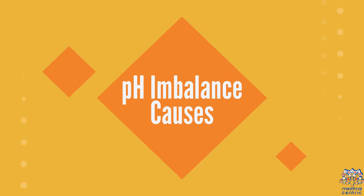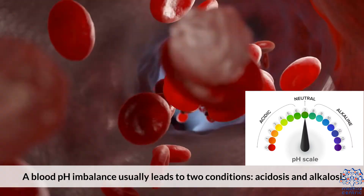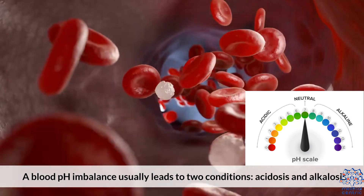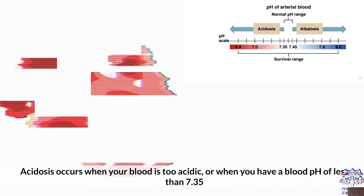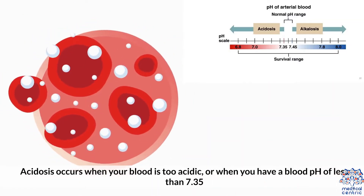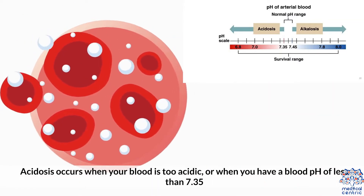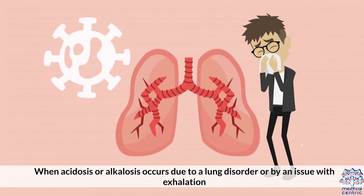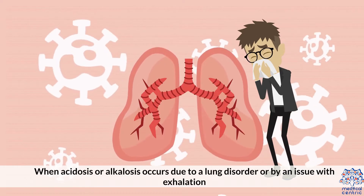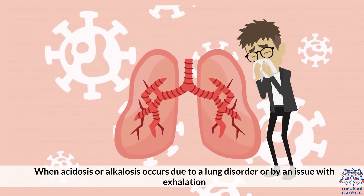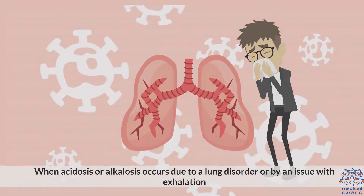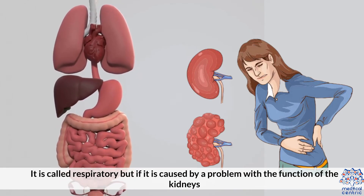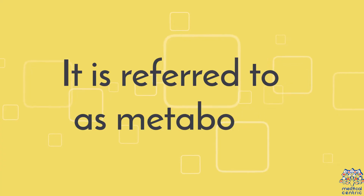pH imbalance causes. A blood pH imbalance usually leads to two conditions: acidosis and alkalosis. Acidosis occurs when your blood is too acidic or when you have a blood pH of less than 7.35. When acidosis or alkalosis occurs due to a lung disorder or by an issue with exhalation, it is called respiratory. But if it is caused by a problem with a function of the kidneys, it is referred to as metabolic.